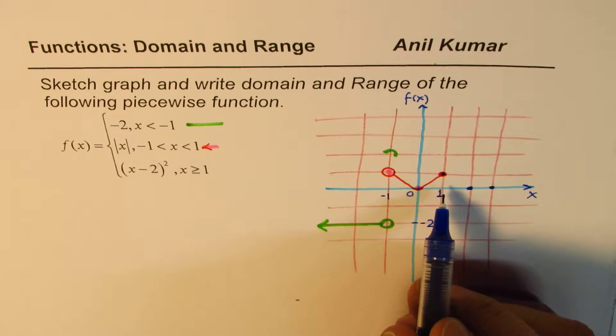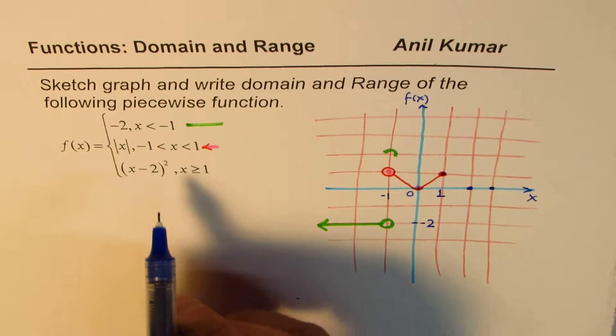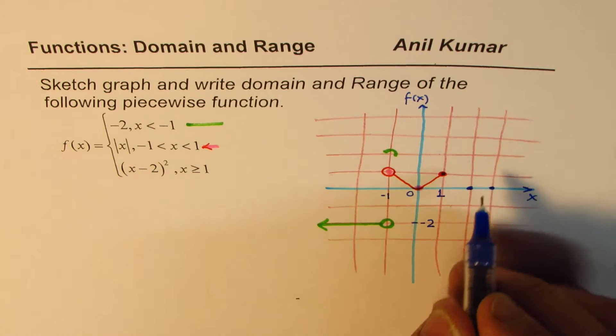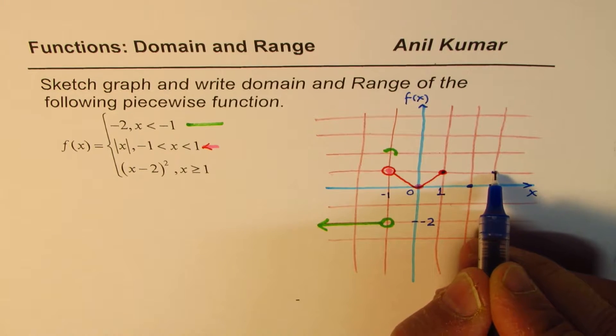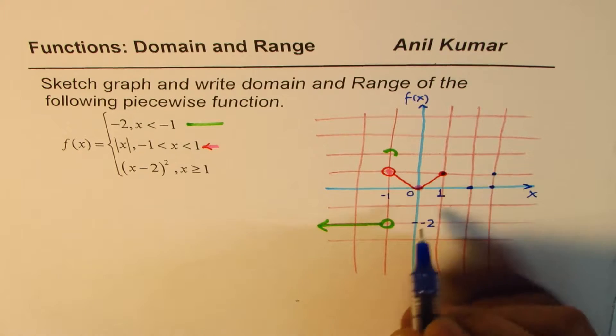And then what we have here is, because it is x minus 2 whole square, let's say if I write 3 here. So 3 will give me again 1. So 3 will give me again 1. So this is not the point of interest. So that is the point of interest.